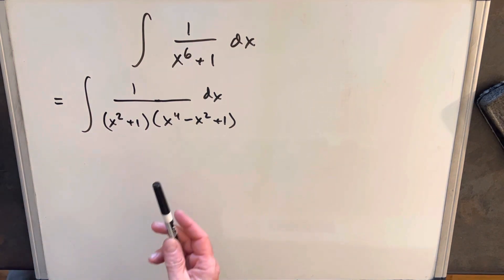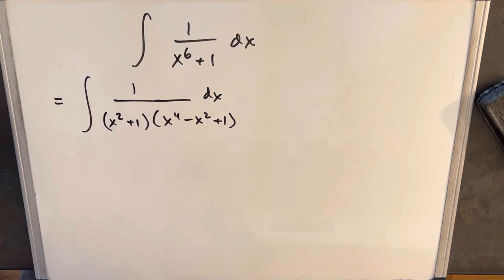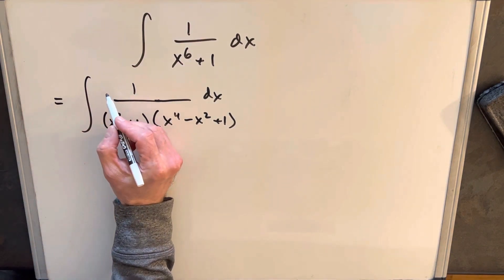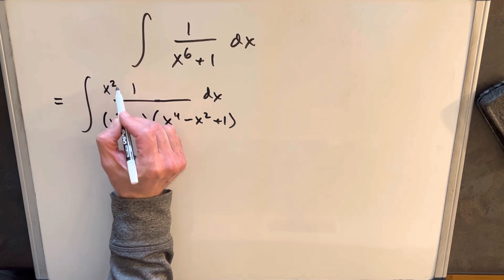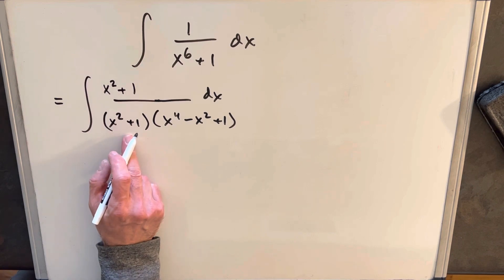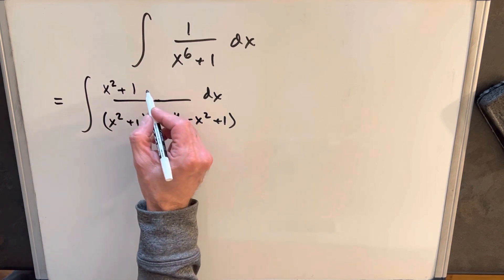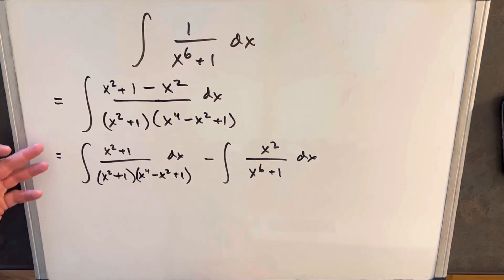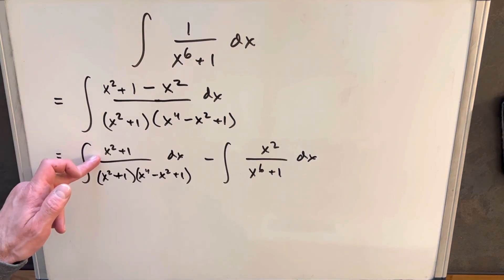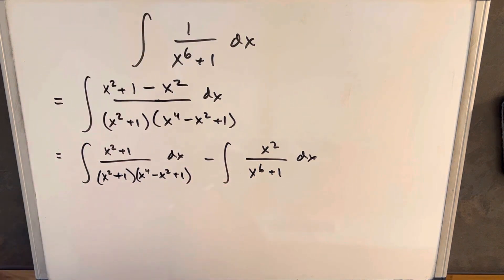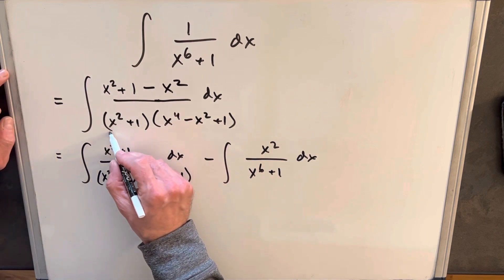What I like to do in these cases — it happens a lot when you have a 1 in the numerator — is create something up there so we can try to get cancellation, maybe a u substitution. What I can do is add an x squared plus 1 in the numerator, and since we can't change the integral, we also subtract that x squared. Now I've split this into two integrals. On the right integral, I'll put this back into the form of x to the 6th plus 1.